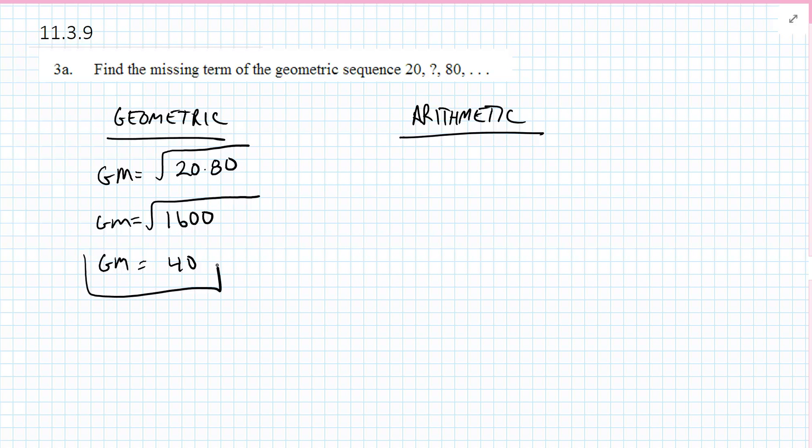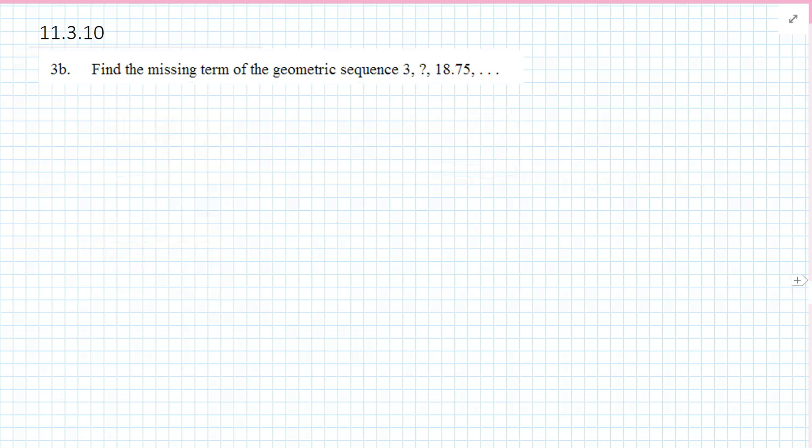Now let's compare. The arithmetic mean is just we're going to average them. So you're going to take 20 plus 80 over 2, which would be 100 over 2, which would be 50. So make sure you know the difference between the geometric mean, you're taking the square root of the product, or the arithmetic mean, you're taking the average.